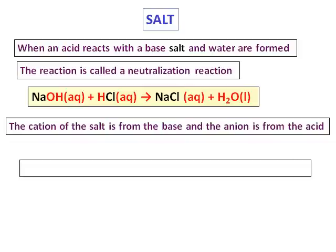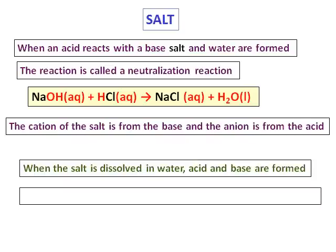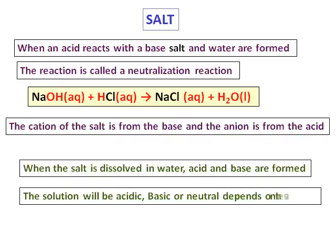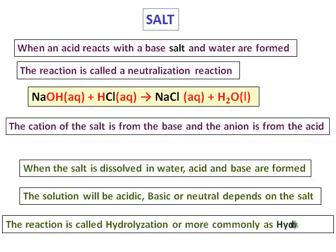The cation comes from the base and the anion comes from the acid. When the salt is dissolved in water, it gives back the acid and the base. The nature of the solution — whether it will be acidic, basic, or neutral — will depend on the acid and the base formed when you dissolve the salt in water. This reaction is called hydrolysis.